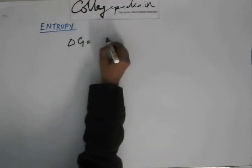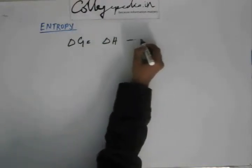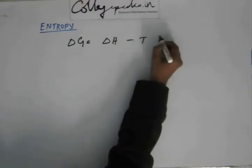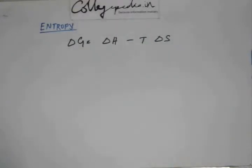Delta G is equal to delta H minus T delta S. We have established that if delta G is negative then the reaction would be spontaneous.